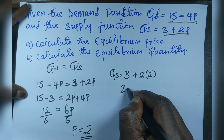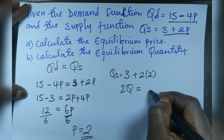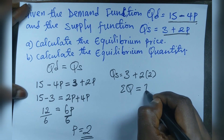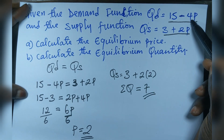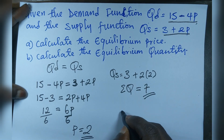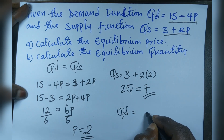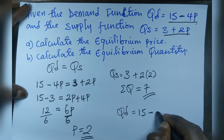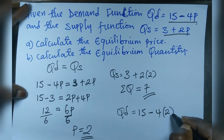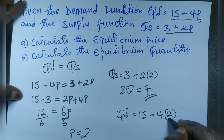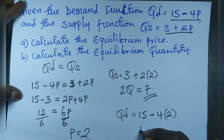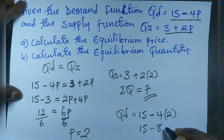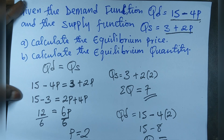So equilibrium quantity equals 7. We can verify this using the demand function: Qd equals 15 minus 4 times 2. Multiplying 4 by 2 gives 8, and 15 minus 8 is still 7. So the equilibrium quantity is confirmed as 7.